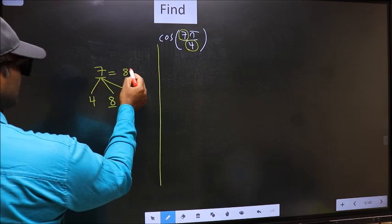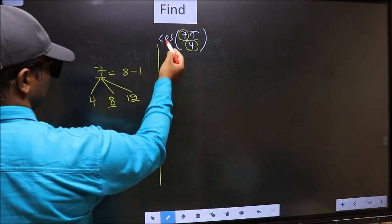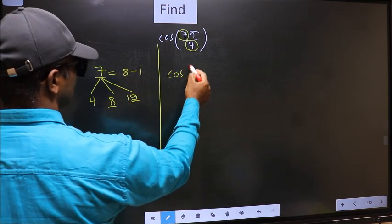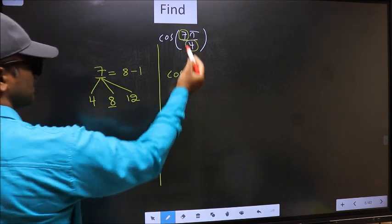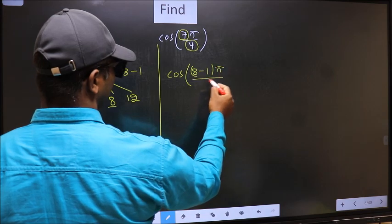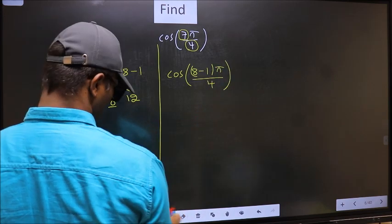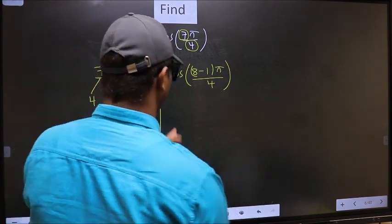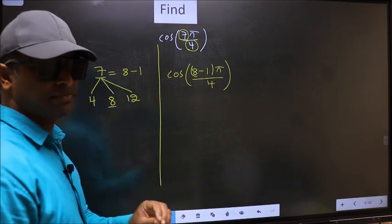So 7 should be written as 8-1. So this will become cos. In place of 7, now you should write 8-1. 1π by 4. This is your step 1.